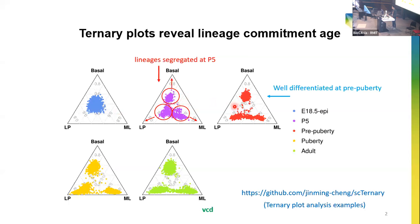At the pre-puberty stage, the cells are well differentiated, and the cell types are not different from the puberty stage or adult stage. Example ternary plot analyses can be found on my GitHub page in the SC ternary repository.